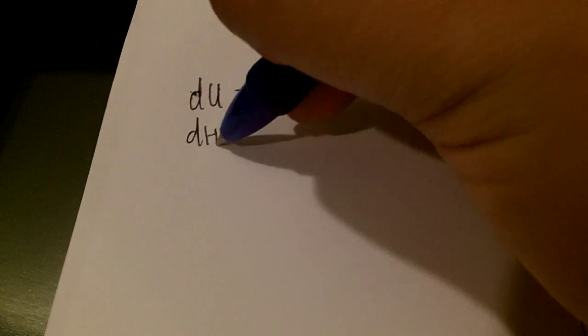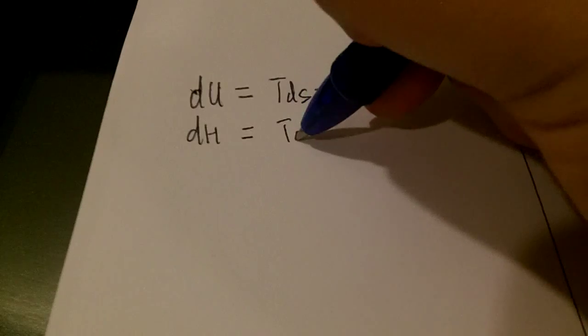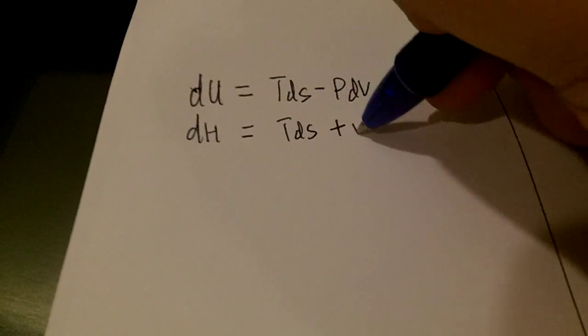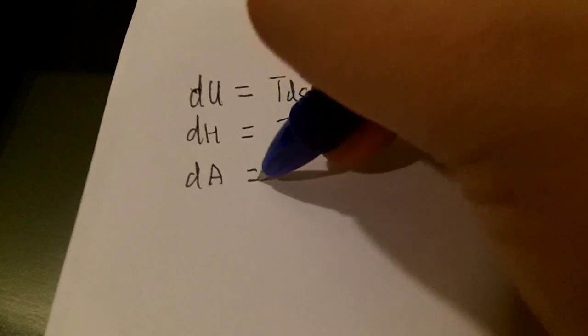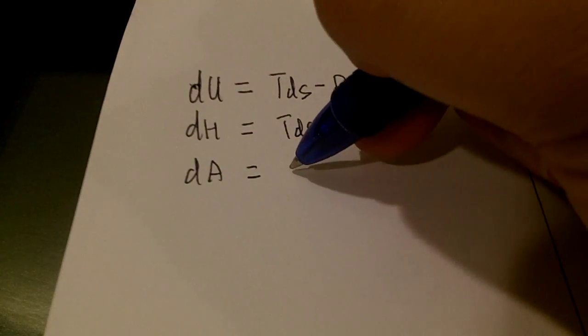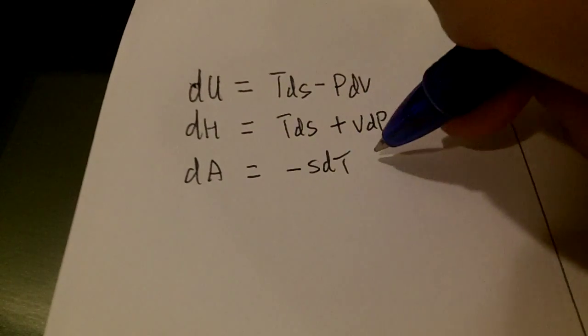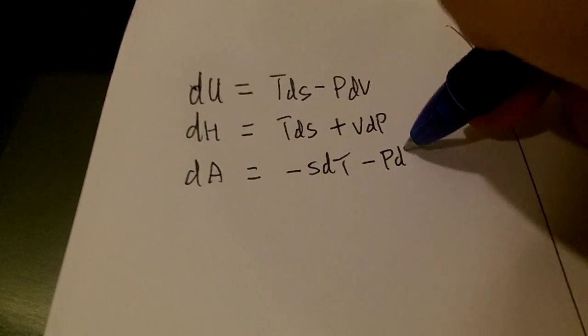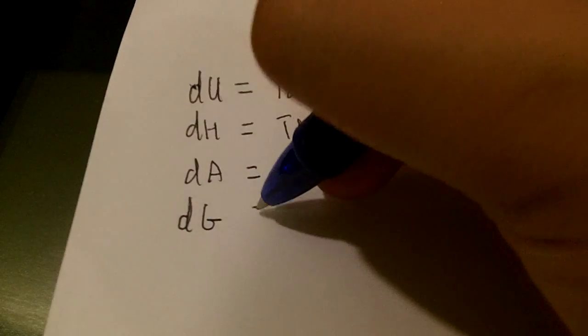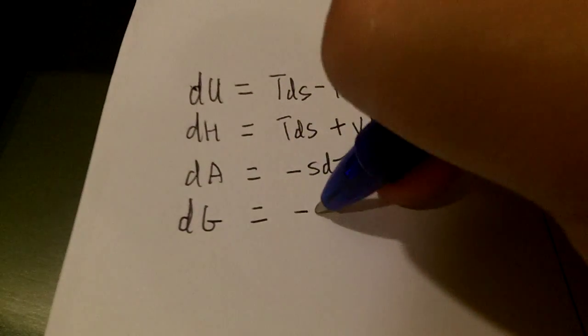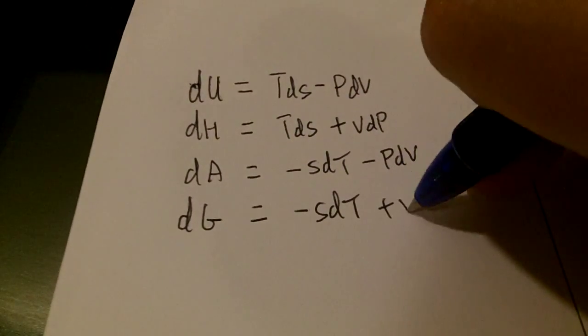And similarly for dH, it's TdS plus VdP. dA, which is Helmholtz free energy, equals minus SdT minus PdV. And dG, which is Gibbs free energy, is minus SdT plus VdP.